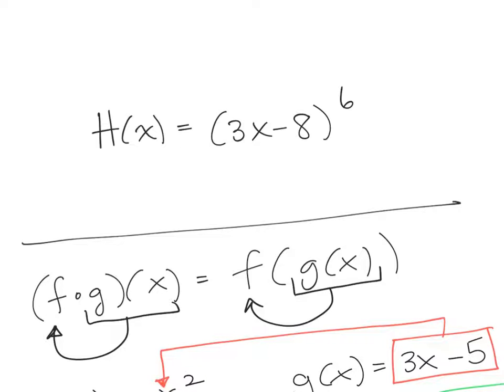So if you look at the example that you have there, H of x is equal to 3x minus 8 to the 6th. I can see I have a 6th power function, and then I have a linear function that does that. So I would say, I need to rewrite H as these two functions, f and g.